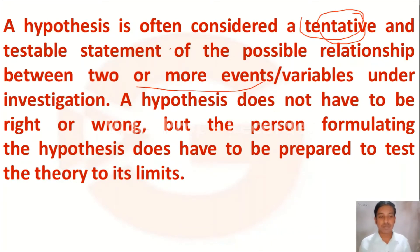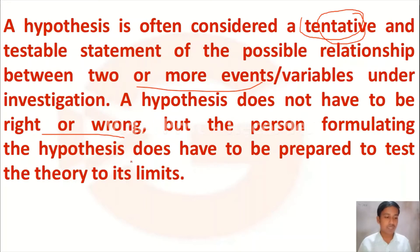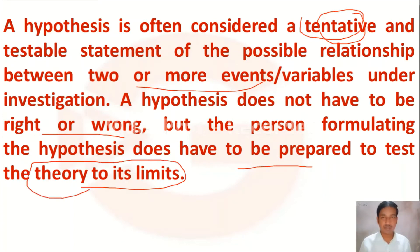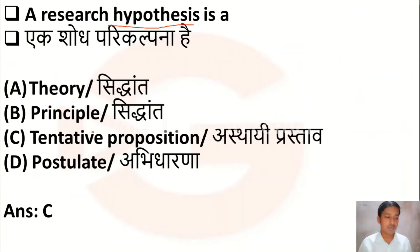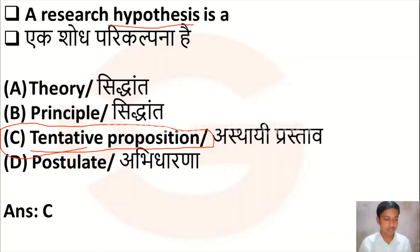A hypothesis is a tentative statement that may be true or false, expressing the relationship between two or more variables. A hypothesis does not have to be right or wrong, but the person formulating it must be prepared to test the theory. Therefore, Option C — tentative proposition — is the correct answer.